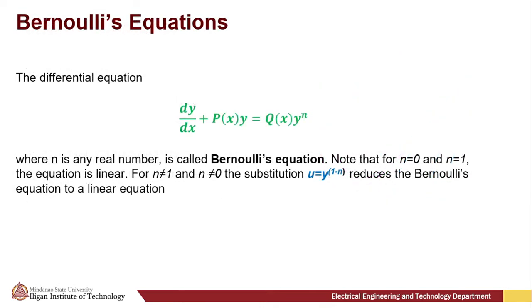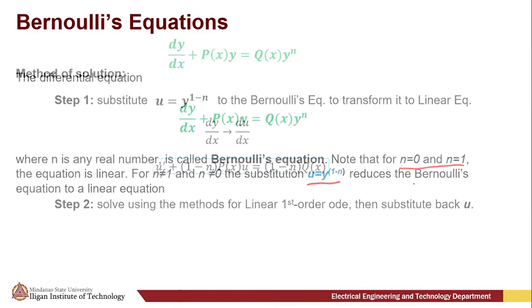A differential equation of dy/dx plus p(x)y equals q(x) times y raised to n, where n is any real number, is called Bernoulli's equation. Note that for n equals 0 and n equals 1, the equation becomes linear. But for n not equal to 1 or 0, the substitution u equals y raised to 1 minus n reduces the Bernoulli's equation to a linear equation.